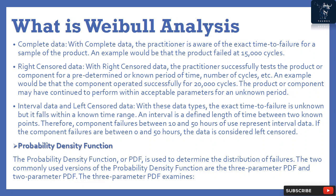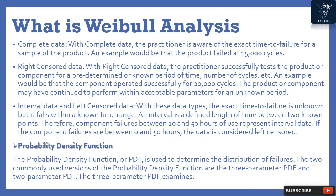An example of complete data would be that the product failed at 15,000 cycles. With right censored data, the practitioner successfully tests the product or component for a predetermined or known period of time — for example, 20,000 cycles — and the product may have continued to perform for an unknown additional period. With interval data and left censored data, the exact time to failure is unknown but falls within a known time range; an interval is a defined length of time between two known points.